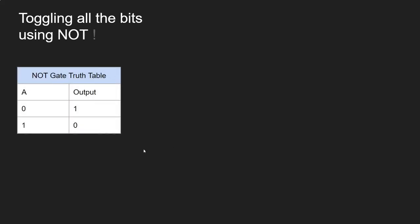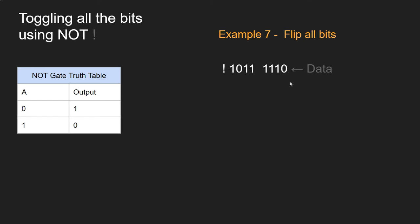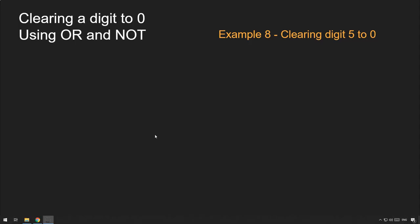What if we want to toggle all of the bits? This is even simpler — we use a NOT gate. A NOT gate takes one input and outputs the opposite: if it was a 0 it goes to 1, if it was a 1 it goes to 0. Notice there's no mask this time because we don't need one — we're flipping all the bits. Every single bit flips, and that's all there is to it.